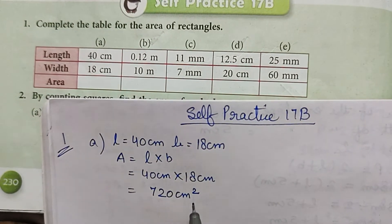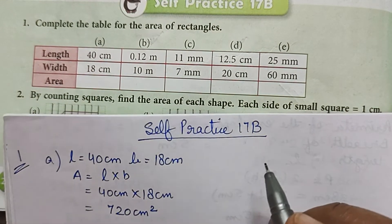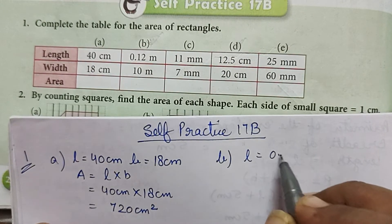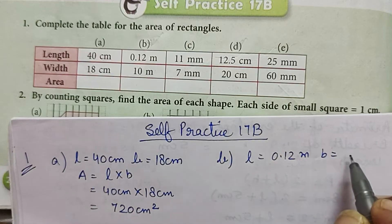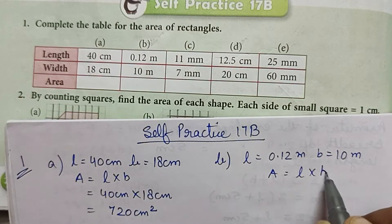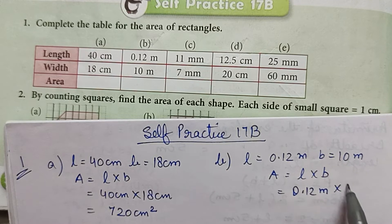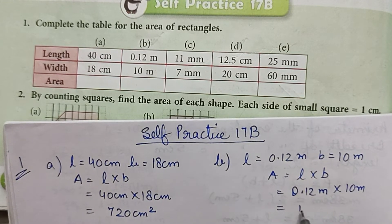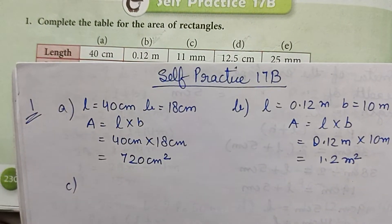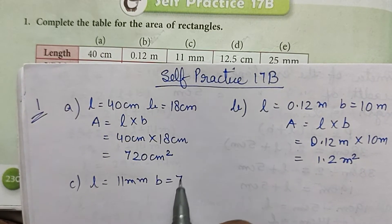Note that the unit — centimeter square or square centimeter — is compulsory; you have to write it. Part b: L is equal to 0.12 meter and breadth is equal to 10 meter. Area is L × B, so 0.12 meter × 10 meter is equal to 1.2 meter square. Part c: length is 11 millimeter and breadth is 7 millimeter.